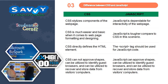The difference between CSS and JavaScript: CSS stylizes components of a webpage, while JavaScript is responsible for the interactivity of the webpage. CSS is much easier and basic when it comes to webpage formatting and designing, whereas JavaScript is more complex compared to CSS. CSS directly defines the HTML element, and the script tag should be used for JavaScript code. CSS cannot validate forms, but JavaScript can validate forms, identify guest browsers, and recover and store data from visitors' computers.